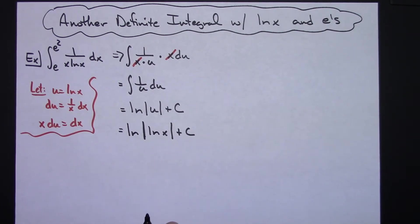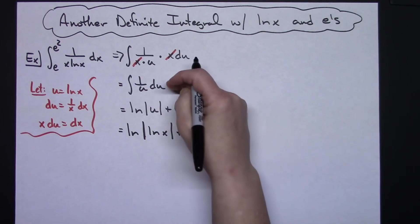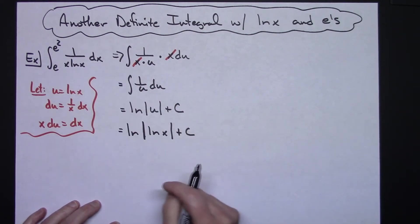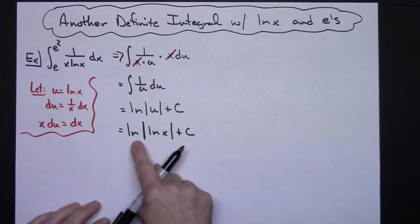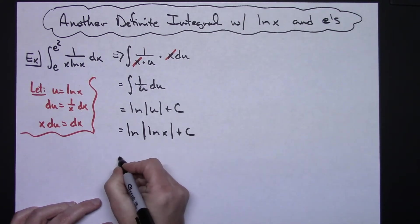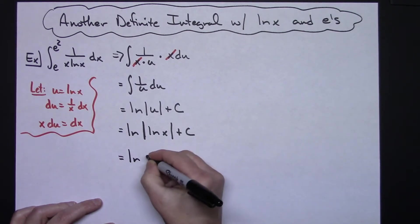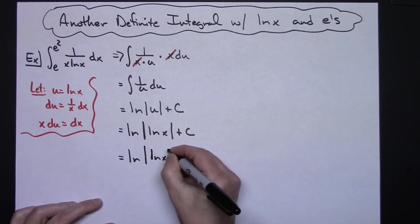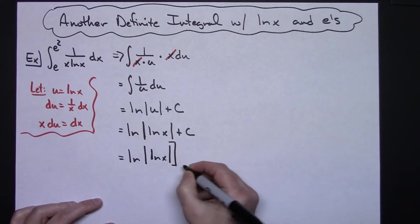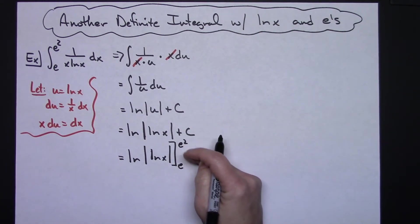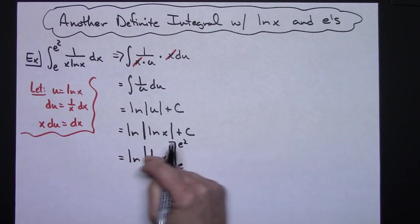That right there is just an indefinite integral. Now I have to realize I'm wanting a definite integral. Since I have this in terms of x now, I can evaluate it with e and e squared. Natural log absolute value natural log x, and I'm going to evaluate that at e and e squared.